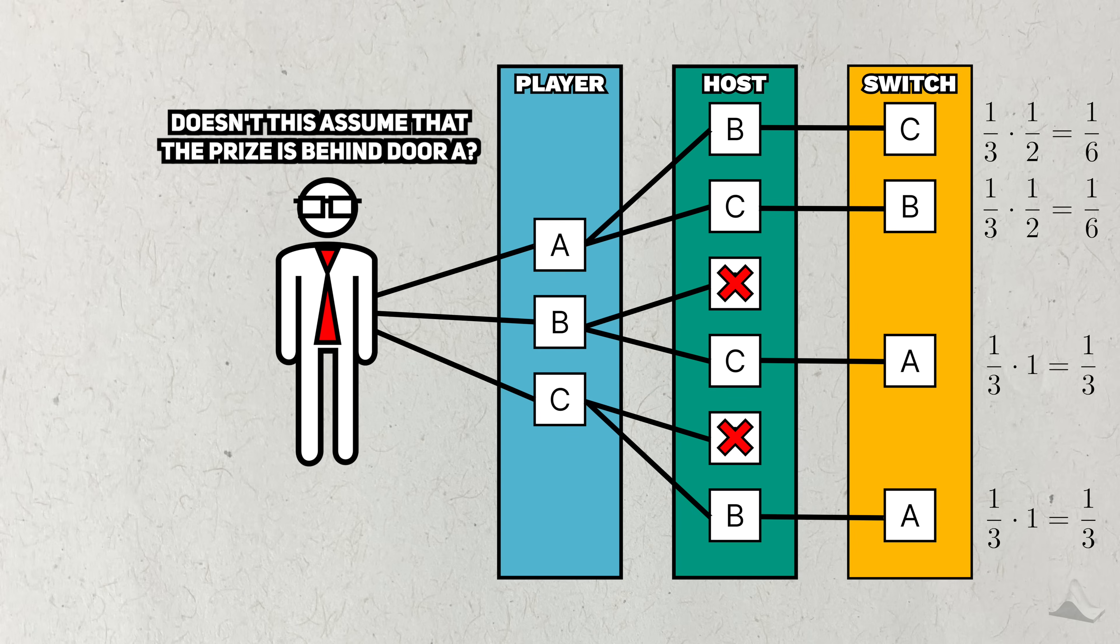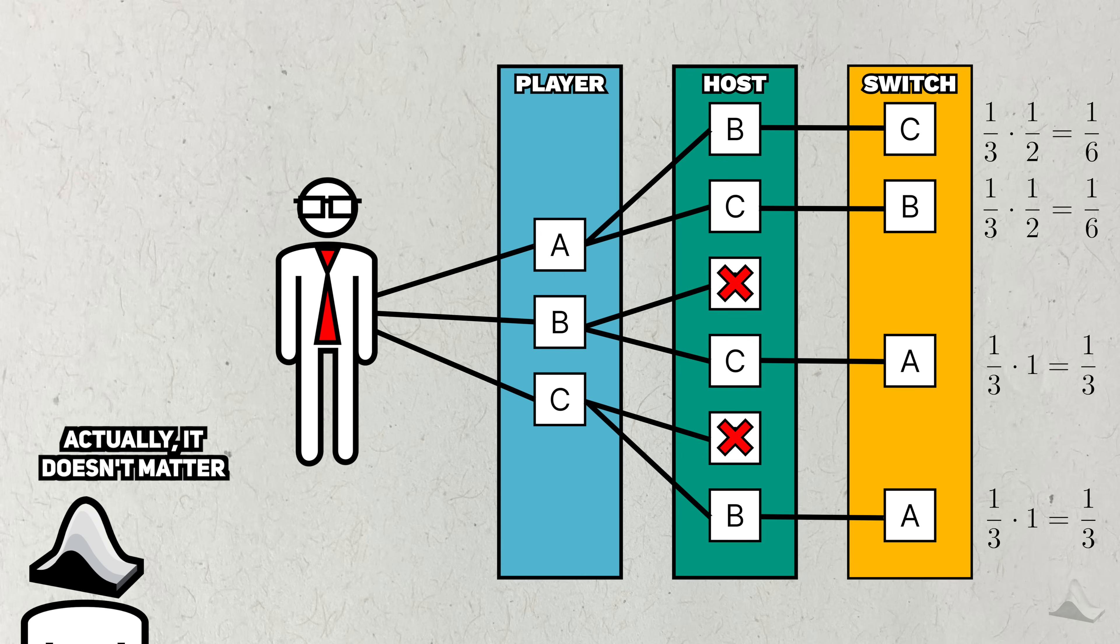Some of you might object that this entire calculation hinges on the assumption that the prize is hidden behind door A. It could be behind B or C, and I'm not accounting for that. In reality, the result will stay the same, no matter what door the prize is behind.